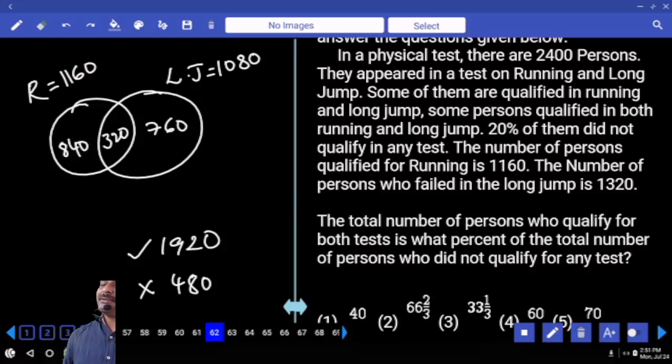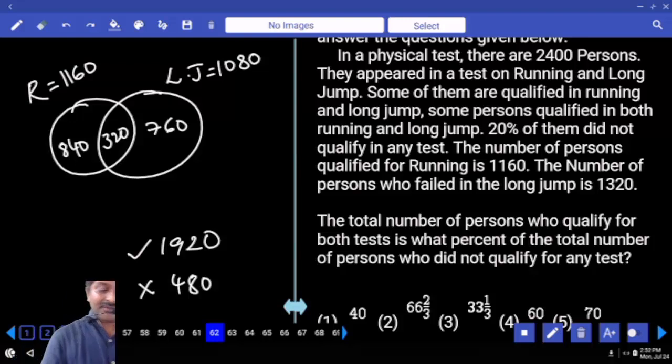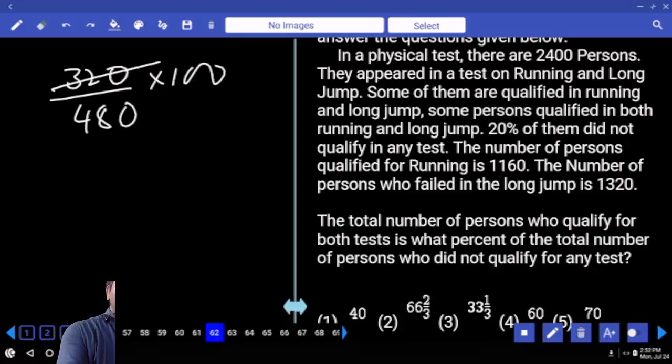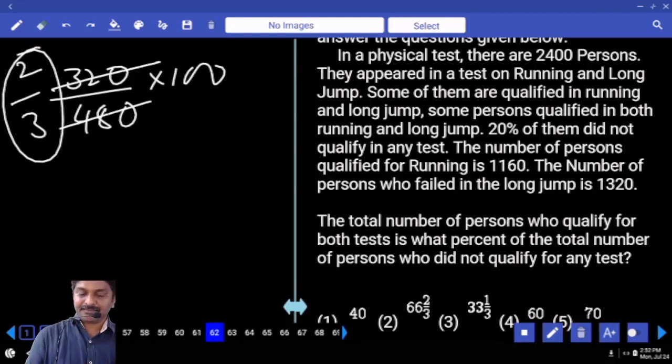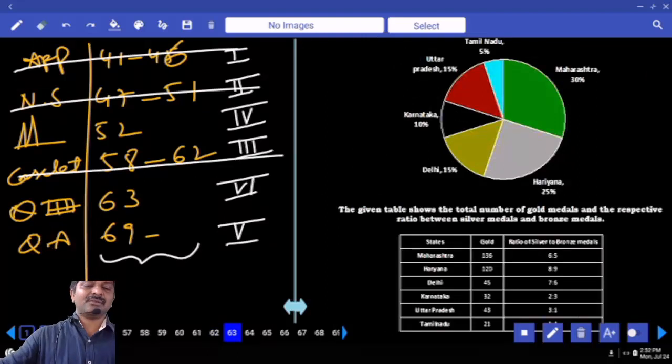The total number of persons who qualify for both tests is what percent of the total number of persons who did not qualify for any test? How many qualified? 320. How many did not qualify any test? 480. So the question is 320 upon 480 into 100 only. 16, 2 times, 3 times. What do you mean by 2 by 3? 66 and 2/3. This is also over, next.